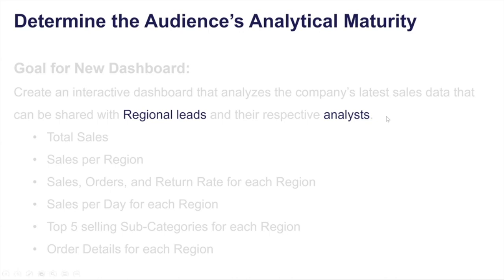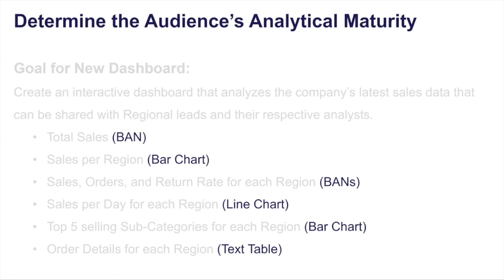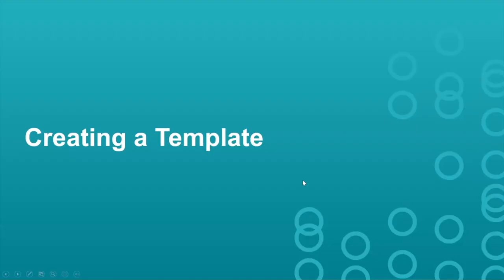Next we determine the views needed to answer the questions. We have a band for total sales, a bar chart for sales per region, a band for sales orders and return rate, a line chart for sales over time (sales per day), a bar chart for the top five selling categories, and a text table for order details. Once we have those requirements, we can transition to creating a template.